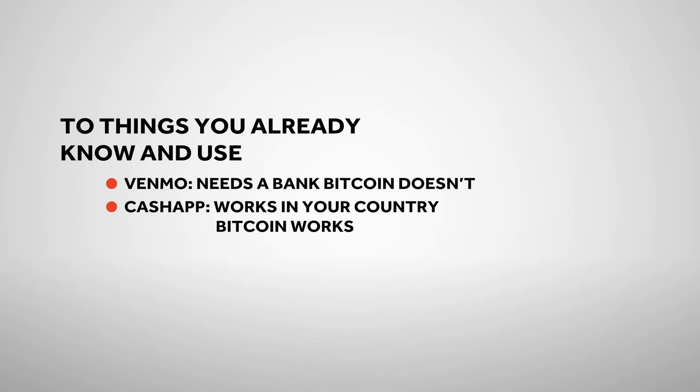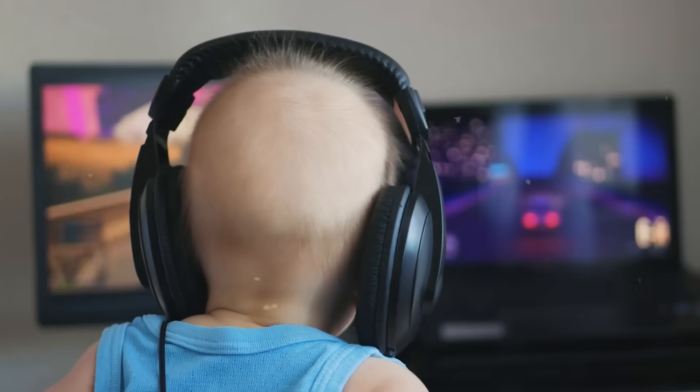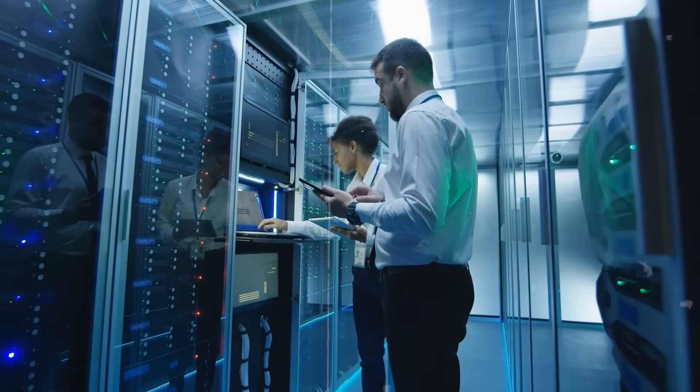Let's compare Bitcoin to things you already know. Venmo needs a bank — Bitcoin doesn't. Cash App works in your country — Bitcoin works anywhere in the world. Roblox Robux or Fortnite V-Bucks you can only spend in the game — Bitcoin is global money you can spend anywhere. It's like if your V-Bucks suddenly worked at Target, Amazon, or Chipotle. And think about Minecraft or Roblox: you can build entire worlds, but technically the company owns them. If the servers shut down, your world disappears. With Bitcoin, you actually own your coins and no company can delete them.